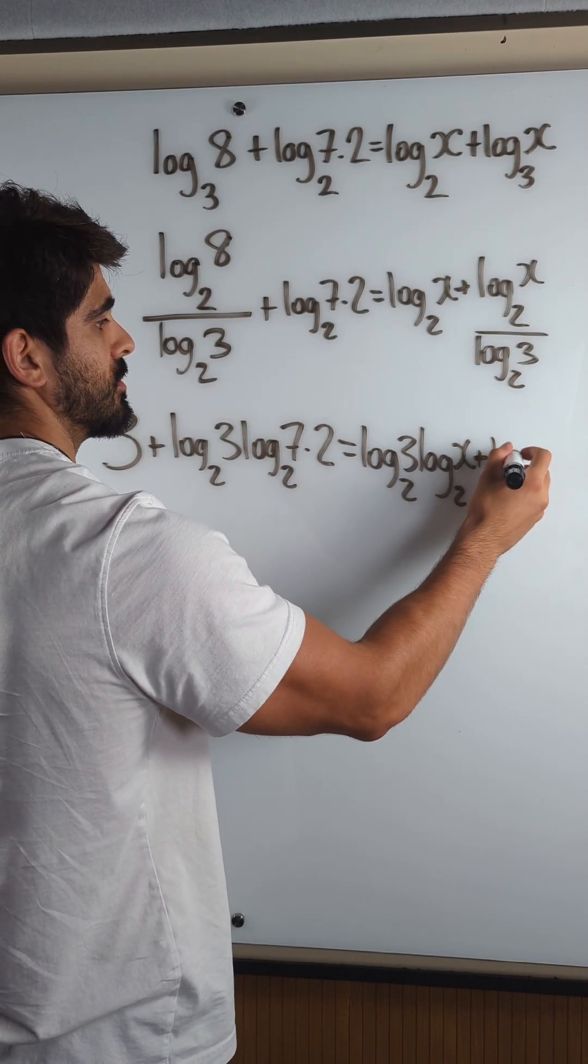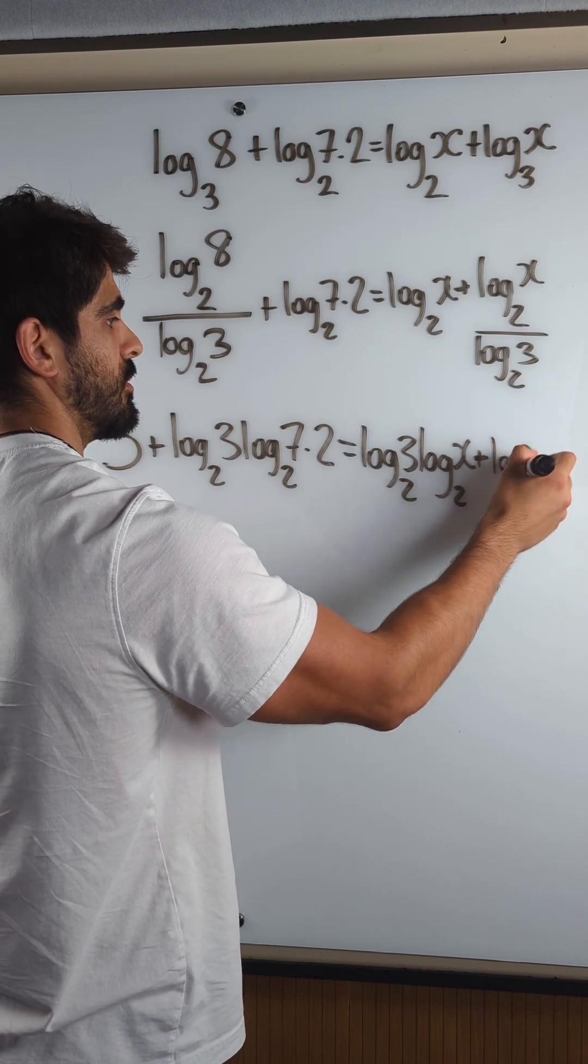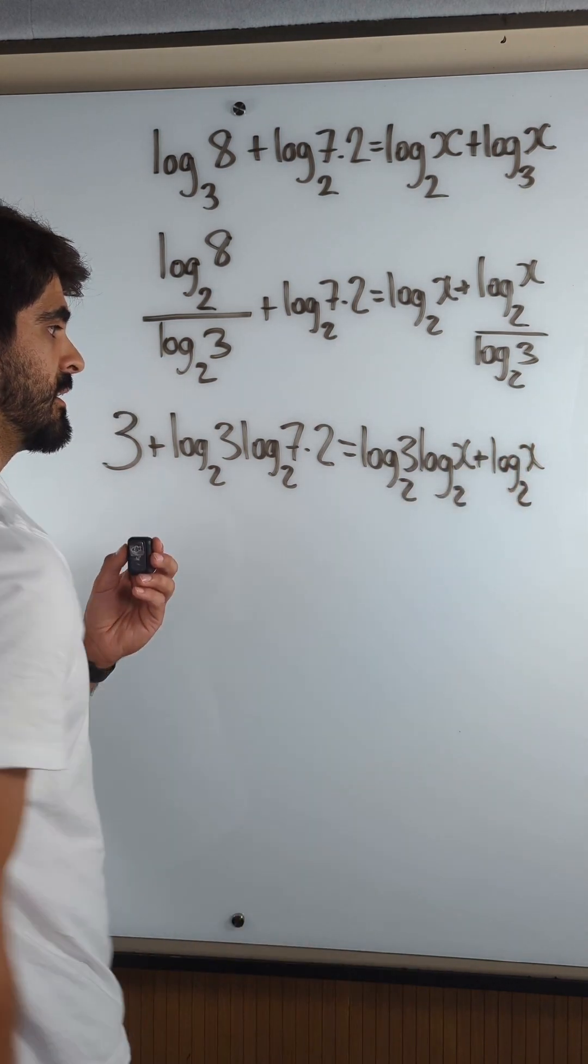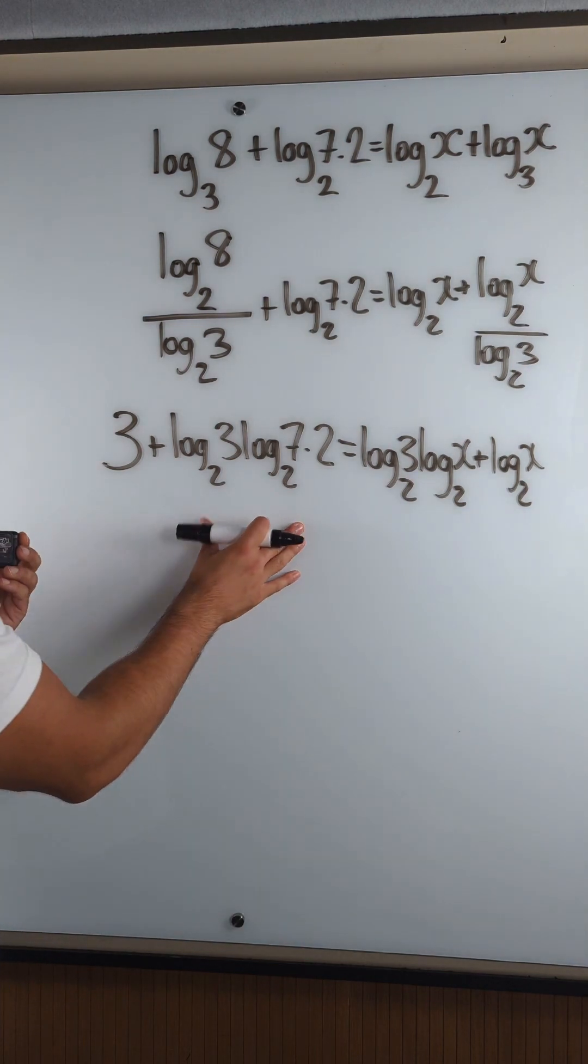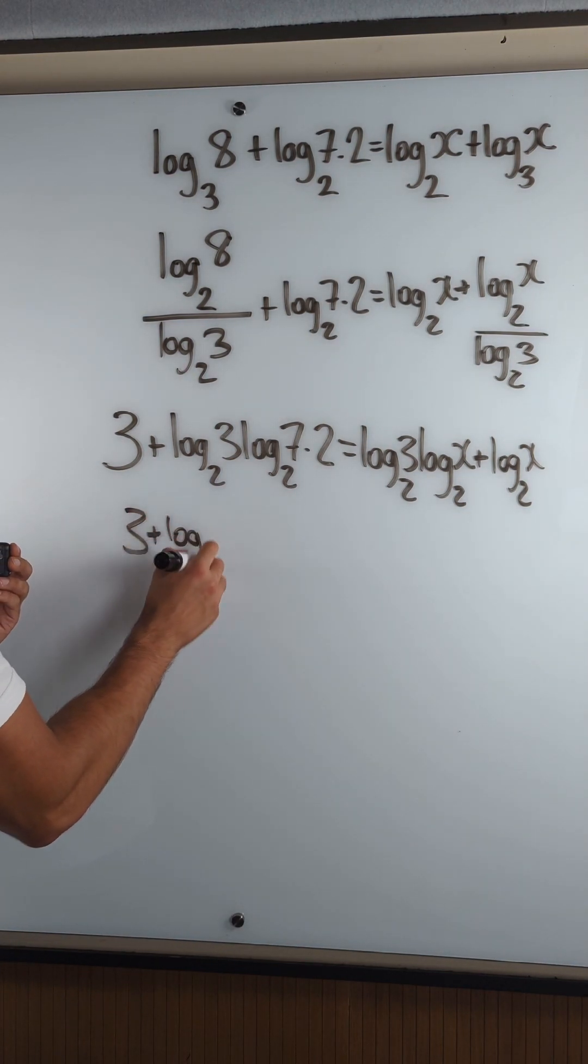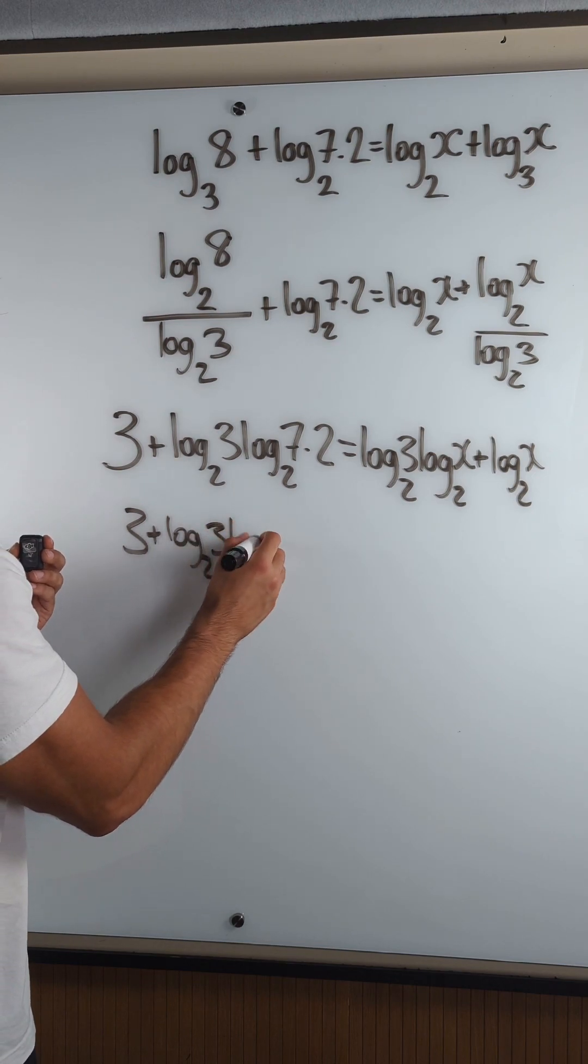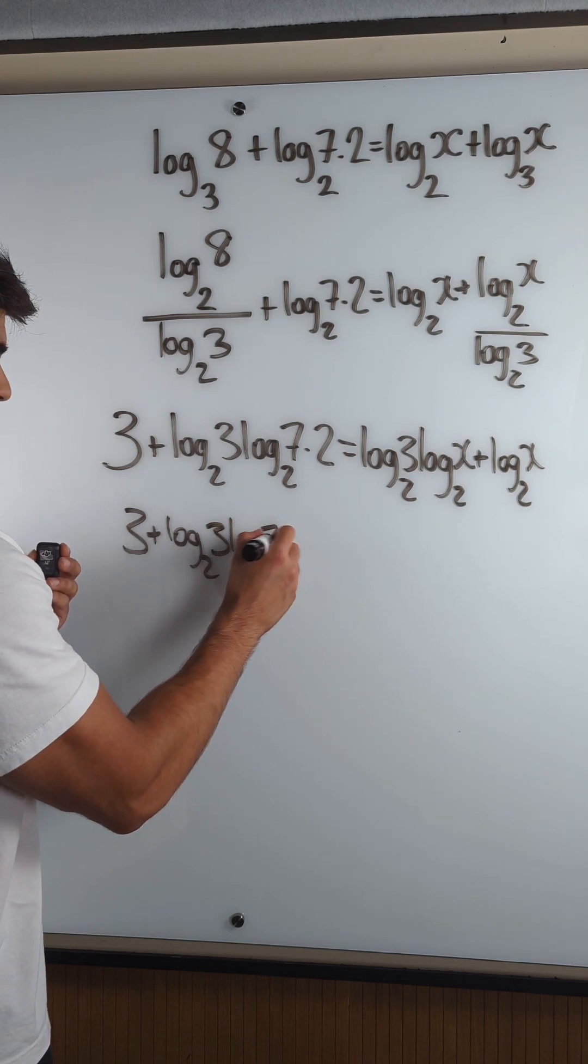Now these are the same, right? So we can collect the like terms. This just is what it is. 3 plus log base 2 of 3 times log base 2 of 7.2.